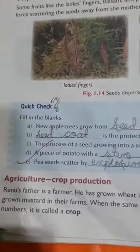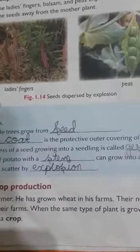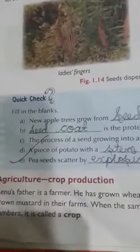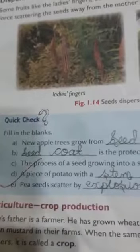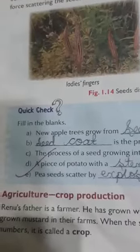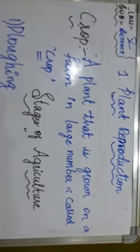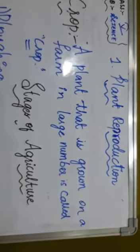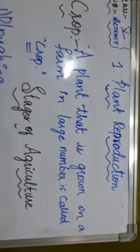Renu's father is a farmer. He has grown wheat in his farm — farm is nothing but khet. Their neighbor has grown mustard in their farm. When the same type of plant is grown on a farm in large numbers, it is called a crop. The meaning of crop is nothing but a plant that is grown on a farm in large numbers.